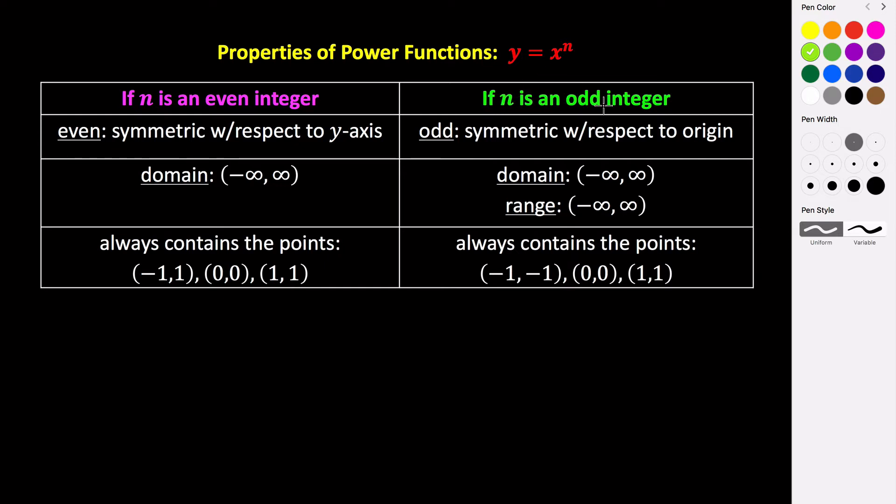If n is an odd integer, then our power function is going to be symmetric with respect to the origin, it's going to be an odd function.